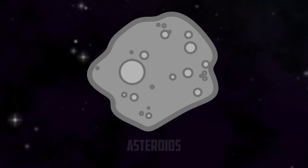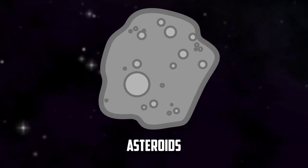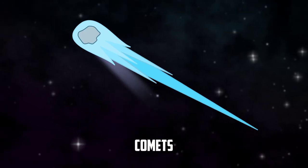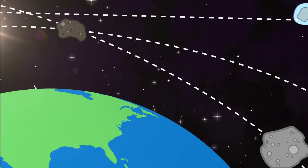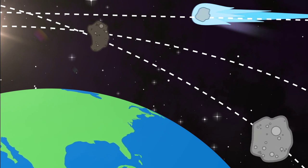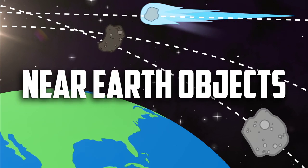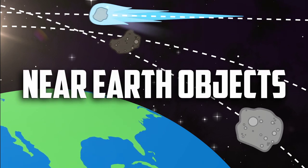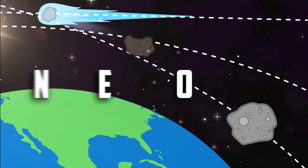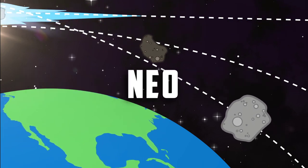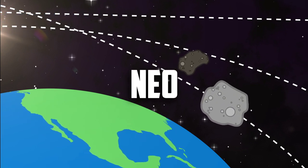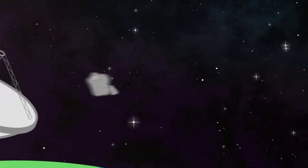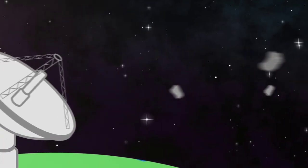Many objects in the solar system, like asteroids, comets and large meteoroids, have orbits that come within close proximity of Earth. These objects are called Near Earth Objects, or NEOs for short. While it's alarming to think about the orbit of these objects, we're working hard to find new ways to solve the threat of NEOs.